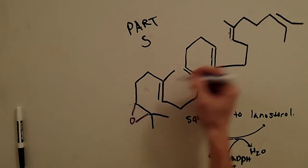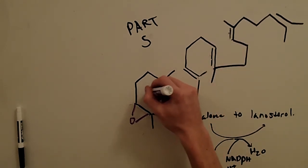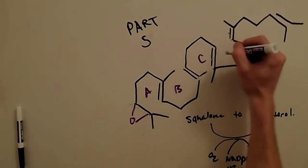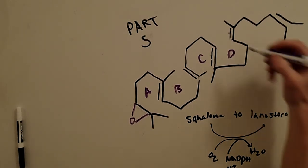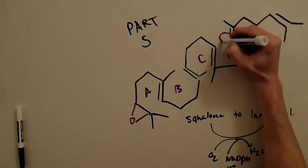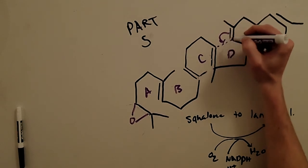Then the pi system just collapses in to form the A, B, C, and D ring systems. I'll start up top here. This comes down and forms a bond there.